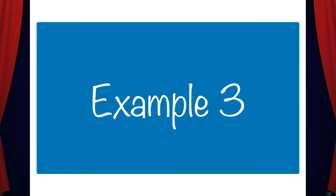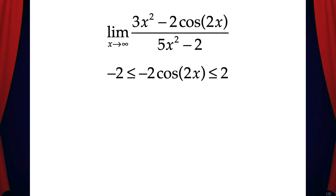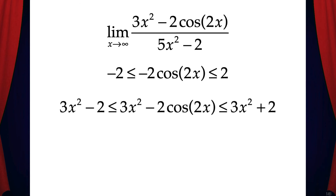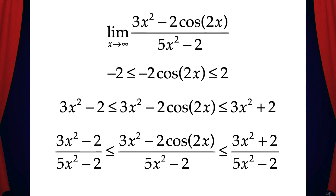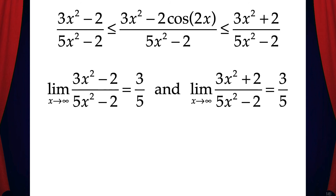Let's do one more example. Find the limit as x approaches infinity of (3x² - 2·cos(2x)) / (5x² - 2). This one's a little trickier. The first thing to notice is that -2·cos(2x) is always greater than or equal to -2 and less than or equal to 2. Now let's add 3x² to every term in this inequality, then divide every term by 5x² - 2. We can take the limit of the left and right functions as x approaches infinity, and we can see that these are both 3/5 by using rules for limits at infinity of rational functions.